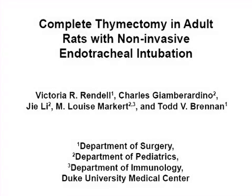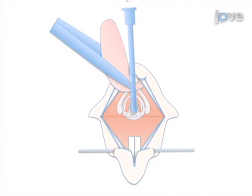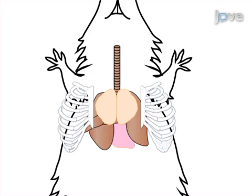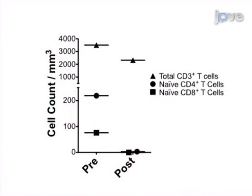The overall goal of this procedure is to evaluate T-cell function in the absence of the thymus. This is accomplished by first intubating the rat and then opening the chest to expose the thymus. Next, the thymus is dissected from the surrounding tissues and hemostasis is obtained. In the final step, the incision is closed in layers. Ultimately, the peripheral blood mononuclear cell population can be evaluated by flow cytometric analysis for the presence of naive T-cells in the absence of thymus function.